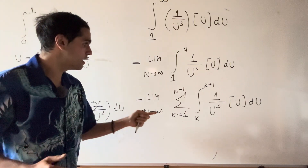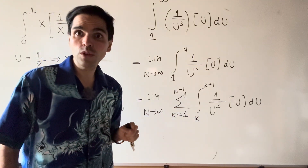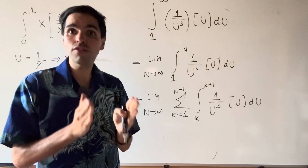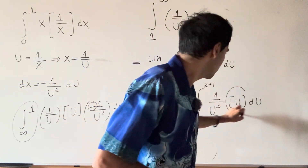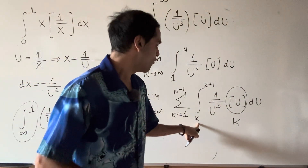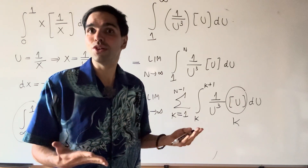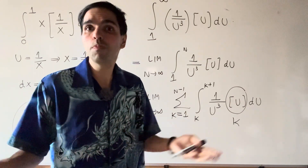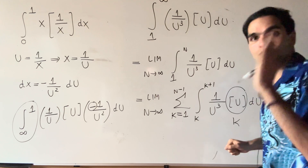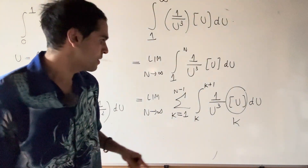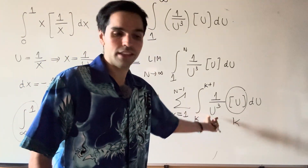Think of the integrals from 1 to 2, 2 to 3, 3 to 4, et cetera. Why did we do that? Because on each of those intervals, the floor of u is just the left endpoint value. For instance, on the interval 2 to 3, the floor of u is just 2 — because floor of 2.5 is 2. Except maybe at 3, but a single point does not affect the integral. So we got rid of the floor and just need to evaluate each piece.